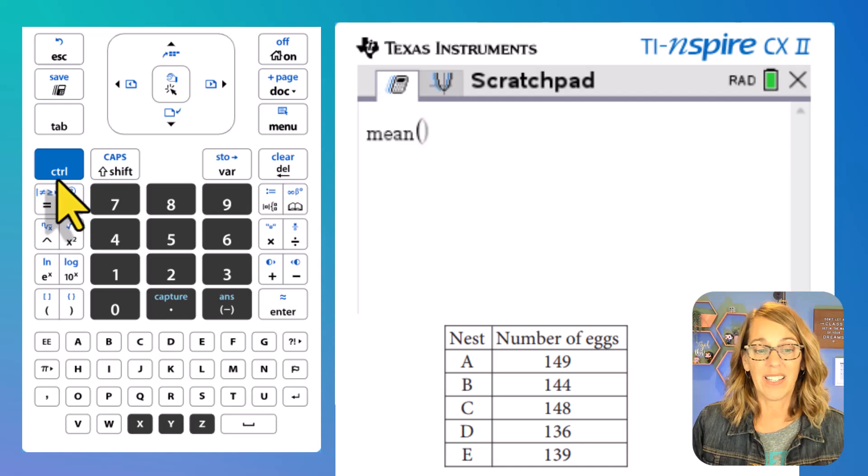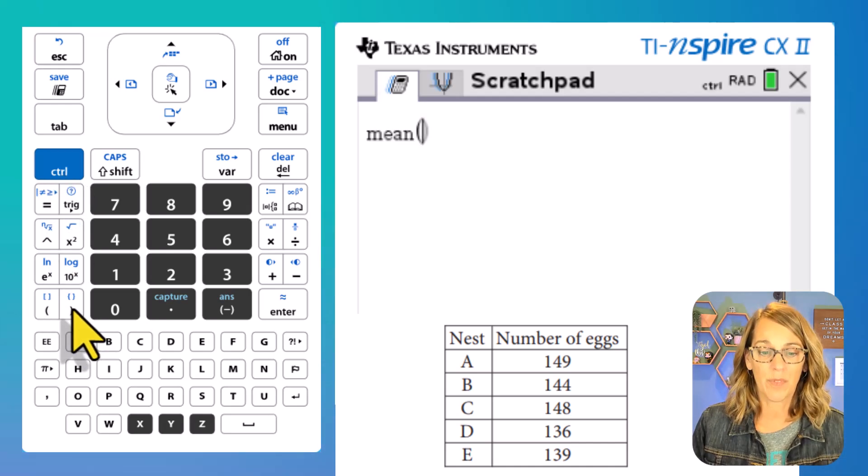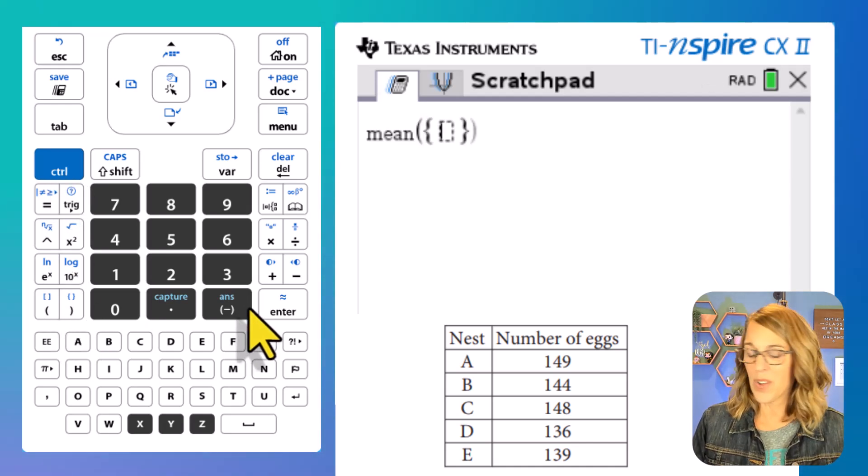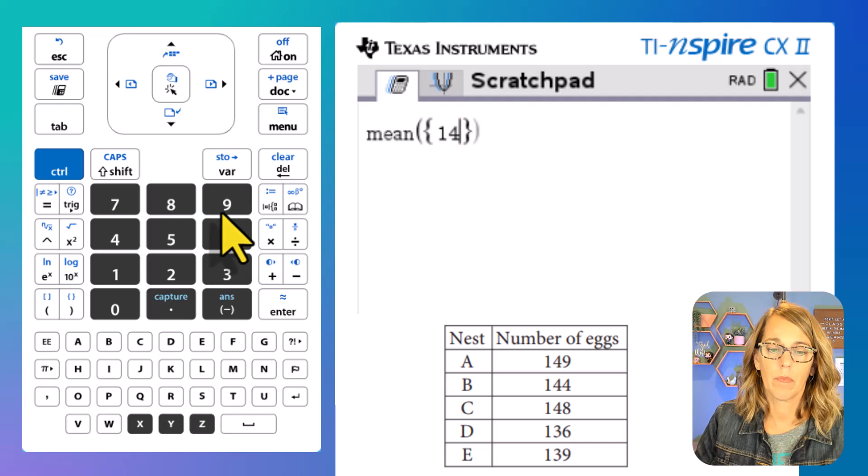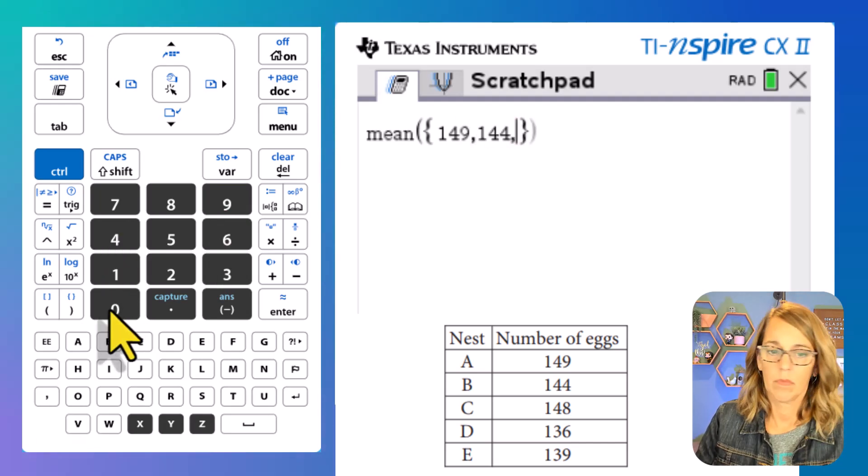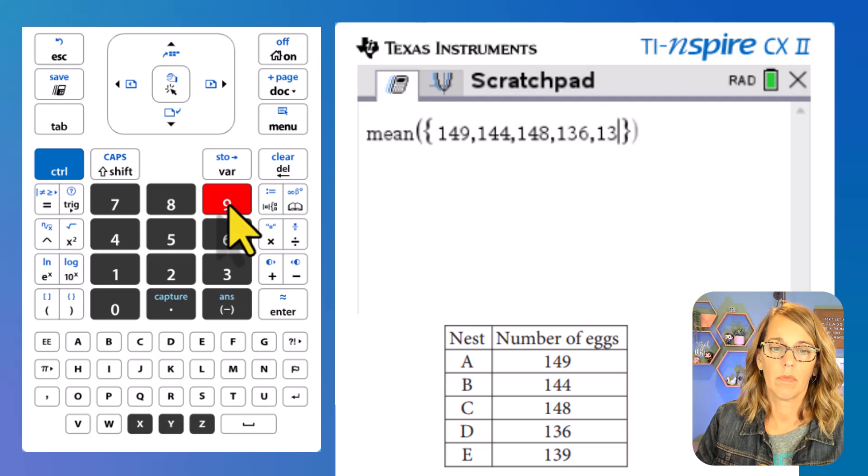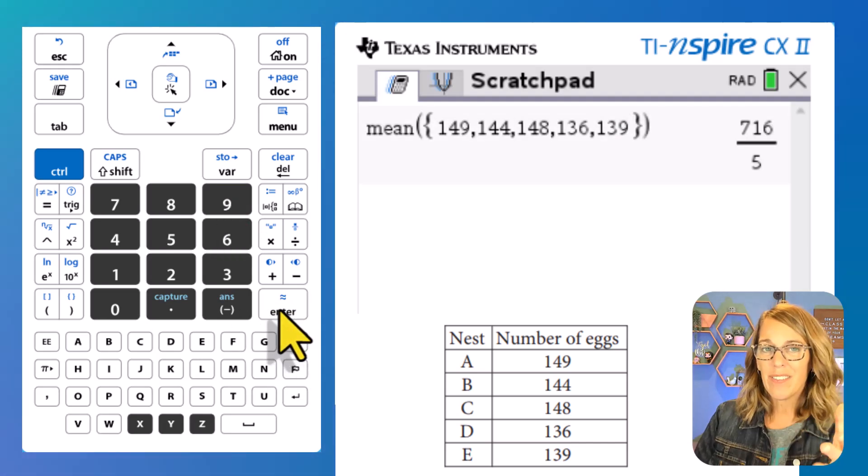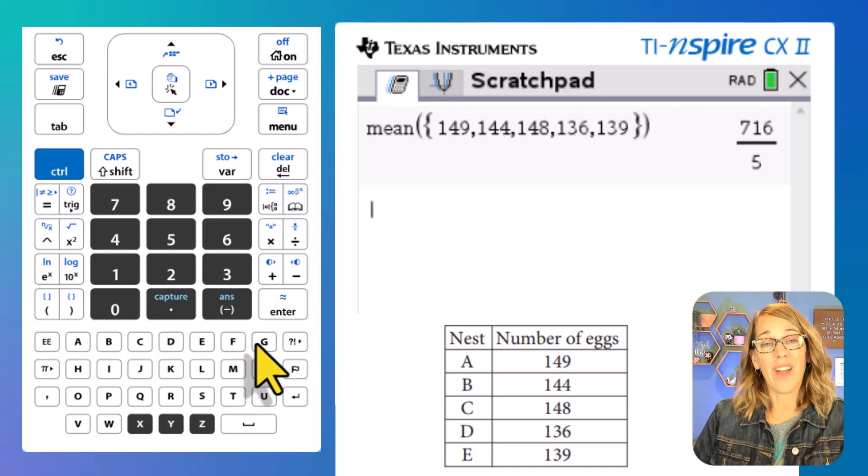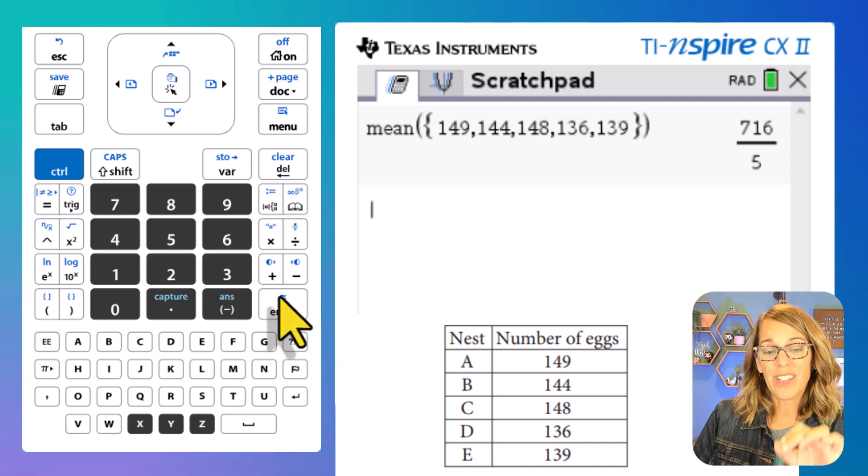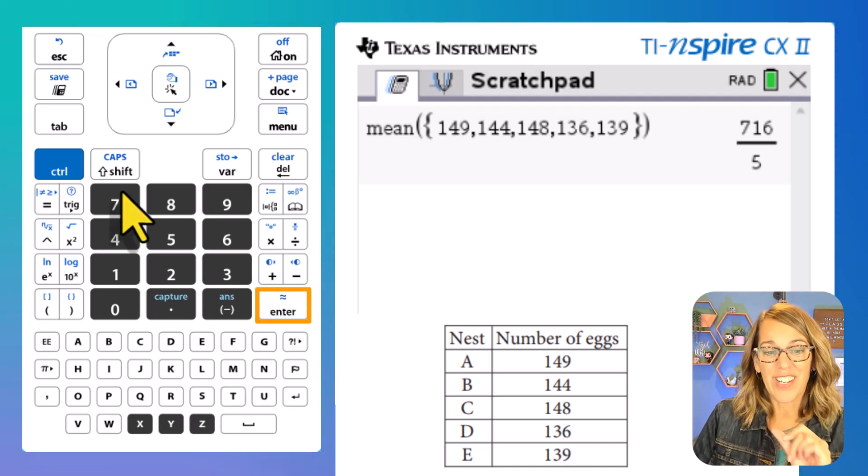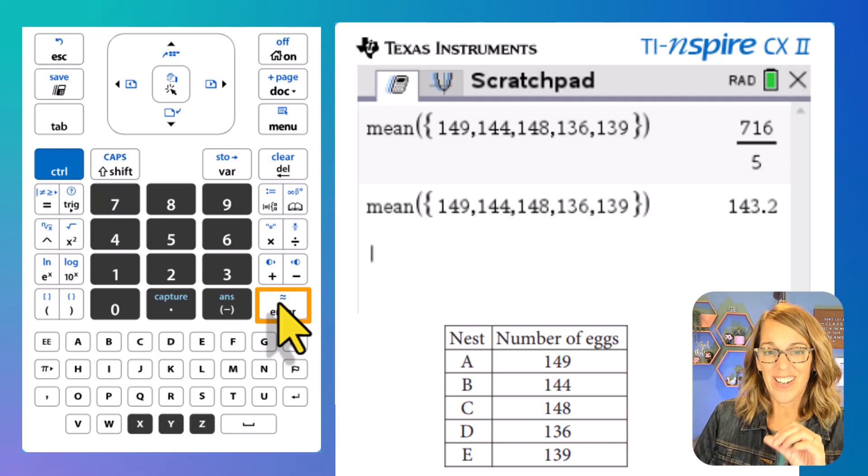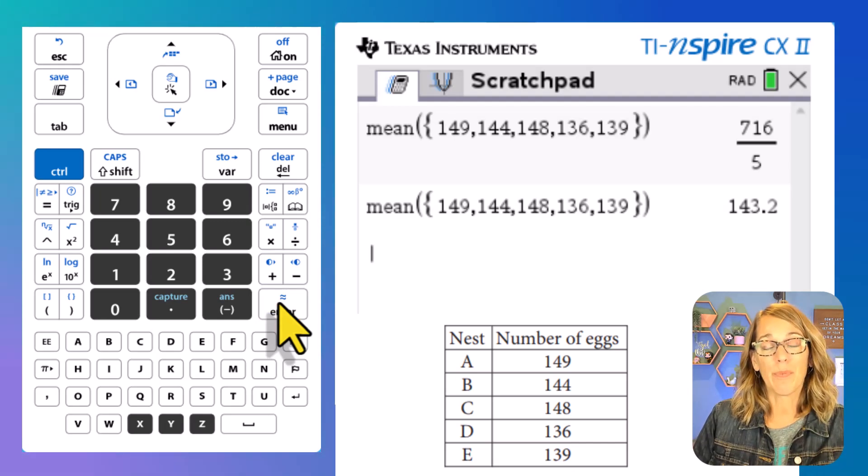Now I want the mean of a list. So I'm going to do CTRL brackets, and then let's go ahead and type these in. Once you've got your last number in there, you can just hit enter, but it gives this to me instead as a fraction. I really want a decimal. Notice that approximate symbol on the enter key. Let's just do CTRL enter to get this into a decimal form.